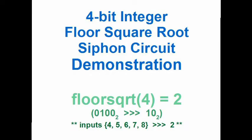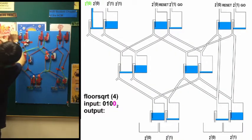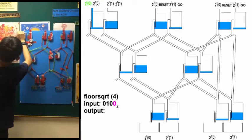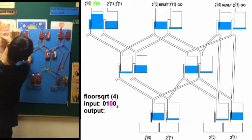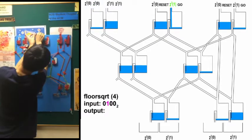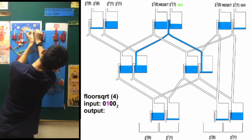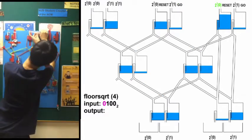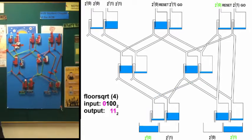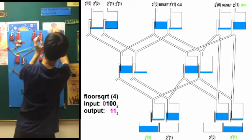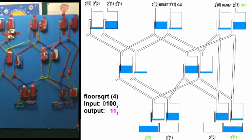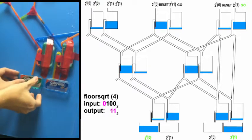In the second demonstration, we will compute the square root of 4. In binary, 0 is in the 1's place, 0 in the 2's place, 1 in the 4's place, and 0 in the 8's place. The 1's place is 0, so we activate the corresponding gate. The 2's place is 0, input accordingly. The 4's place is 1, input accordingly. Input GO for calibration. The 8's place is 0, input accordingly.